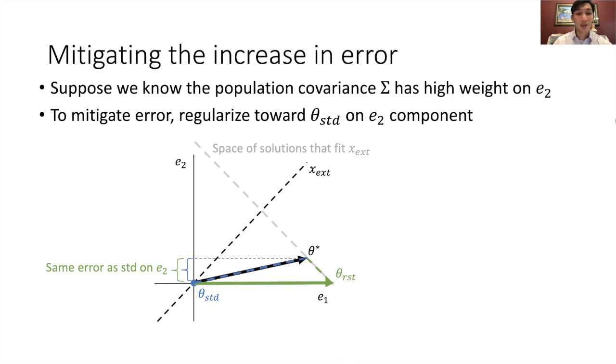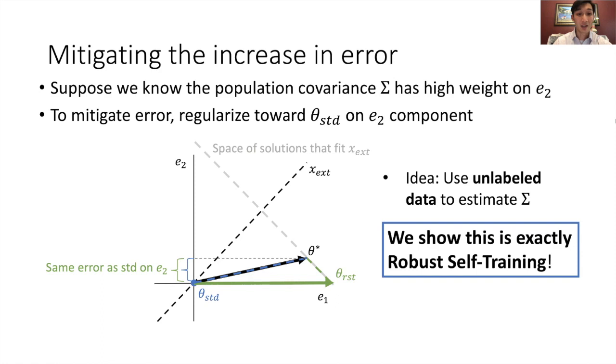So how do we implement this without knowing the population covariance sigma? The idea is to use unlabeled data to estimate sigma, guiding which directions to regularize more. We show that this procedure is exactly robust self-training in our paper.